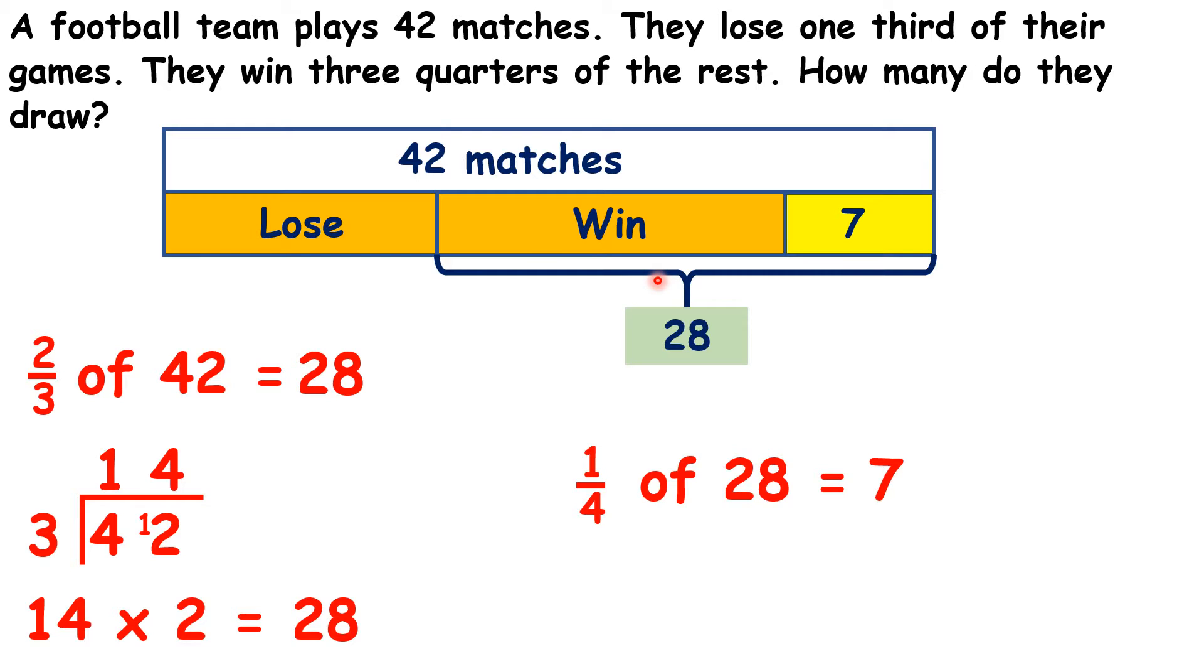Then, they saw that three quarters of the rest, so three quarters of the 28, were won. But they didn't need to find this out, because if three quarters were won, that means one quarter were drawn. So they just needed to find one quarter of 28, which is seven.